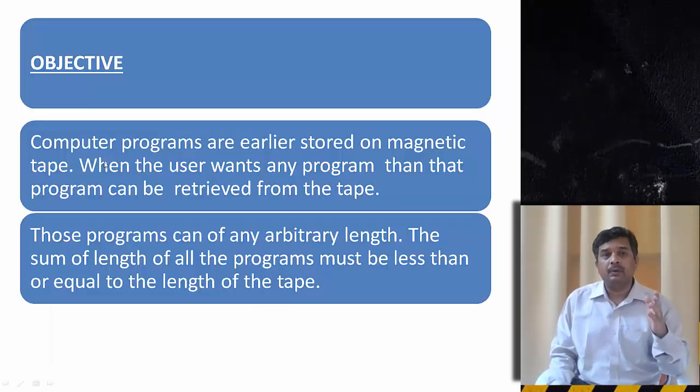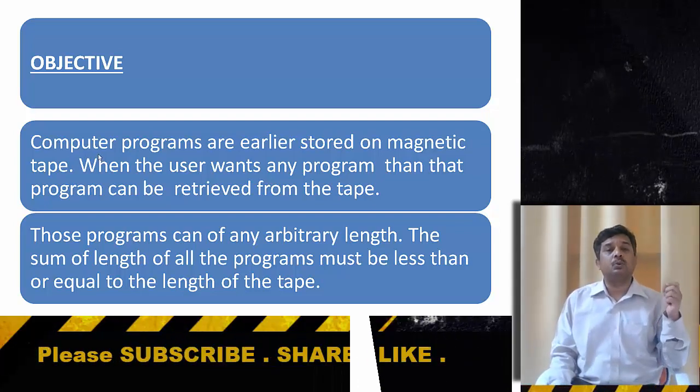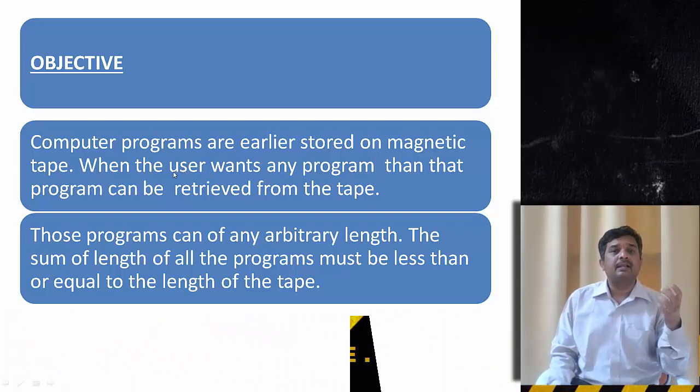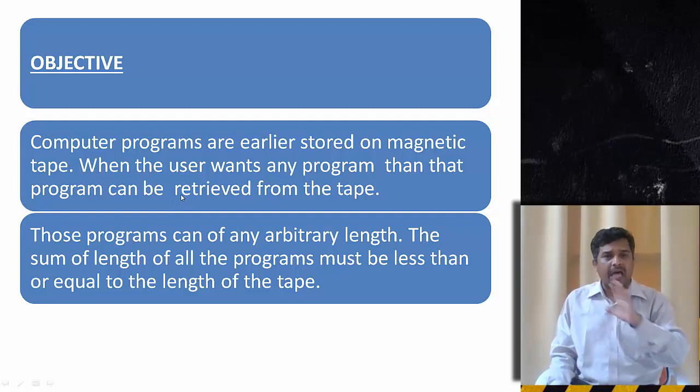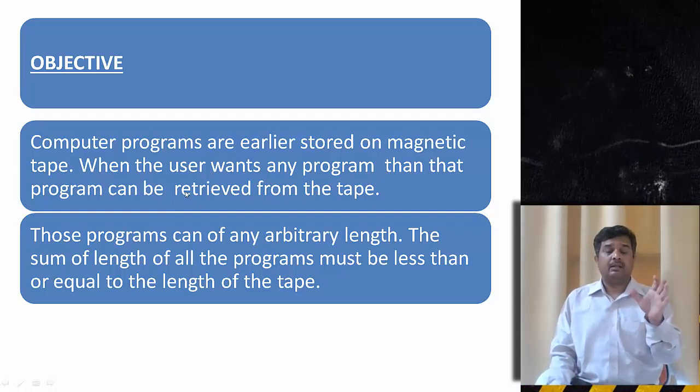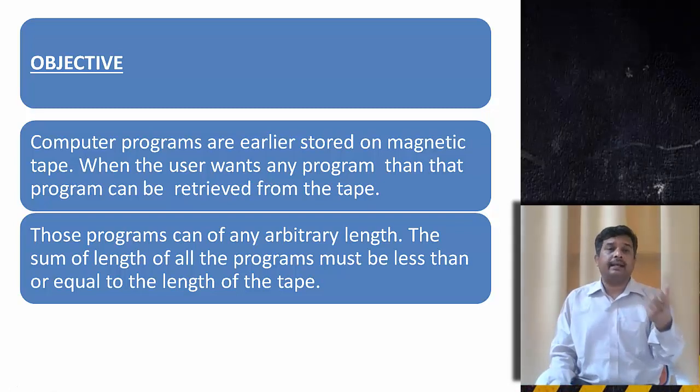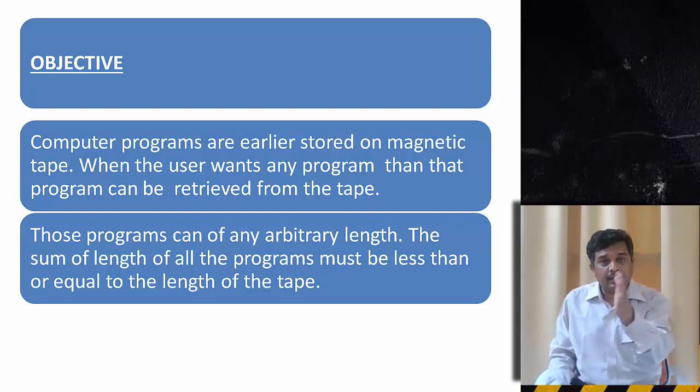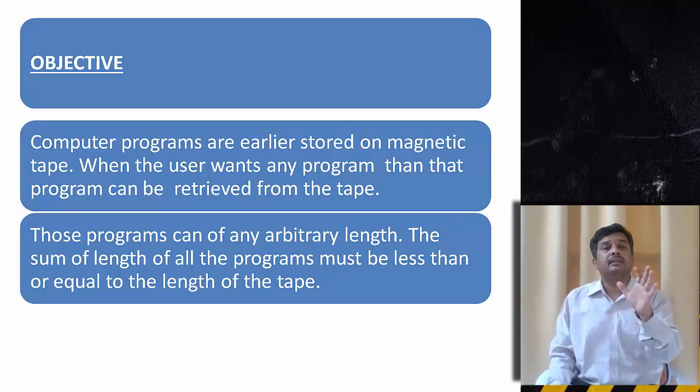So basically what we do with computer programs. Computer programs were earlier stored in magnetic tapes. When a user wants the program, then he can retrieve it from the tape. The length of the programs are arbitrary by nature. Let us say there are five programs, and the length of each of the five programs are different. But the sum of each of them is supposed to be equal or less than the length of the tape.